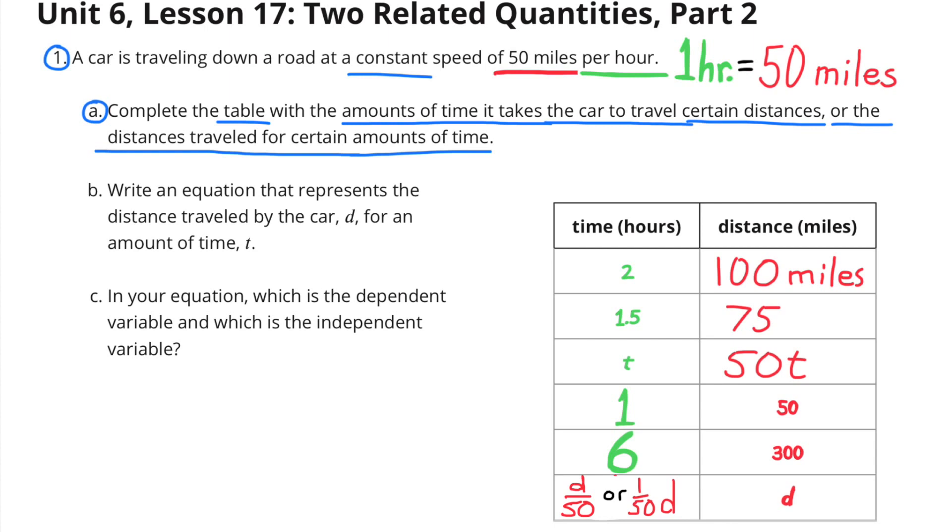A distance of 50 miles would take 1 hour, or 50 divided by 50 equals 1. A distance of 300 miles would take 6 hours. 300 divided by 50 equals 6. And a distance of D miles would be D divided by 50, D over 50, or 1 fiftieth times D.